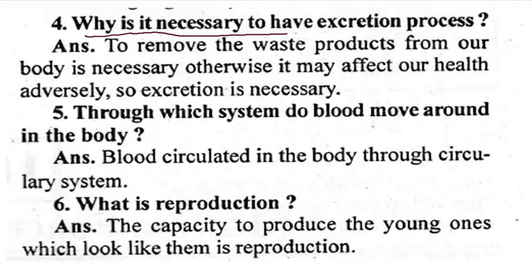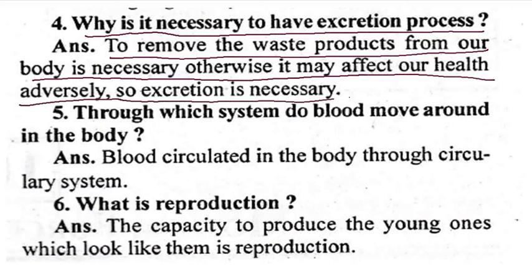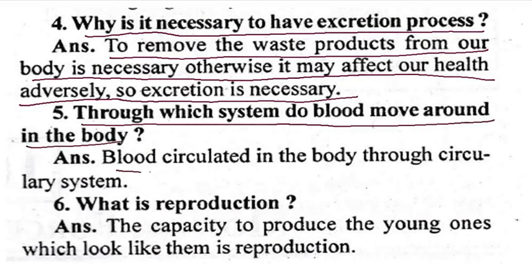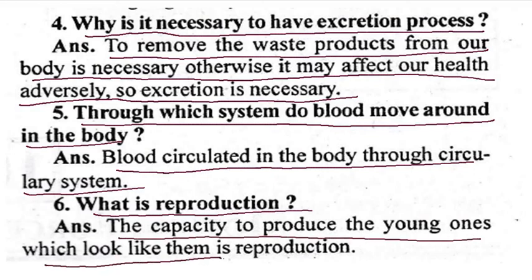Why is it necessary to have the excretion process? The answer is: to remove waste products from our body is necessary; otherwise, it may affect our health adversely. So excretion is necessary. Through which system does blood move around in the body? Blood circulates in the body through the circulatory system. What is reproduction? The capacity to produce young ones which look like the parents is called reproduction.